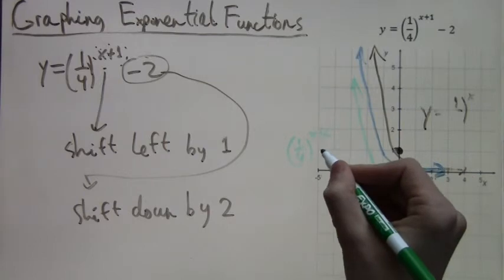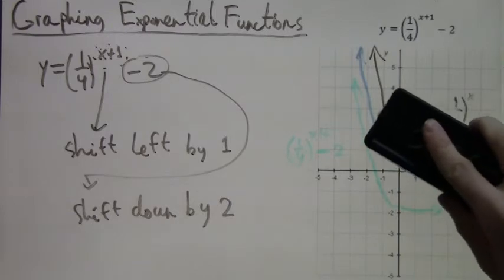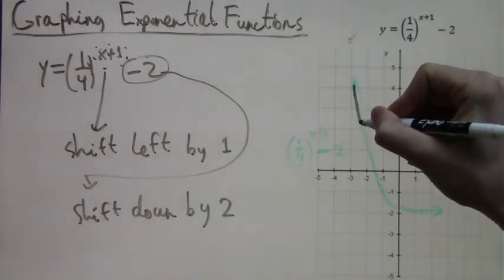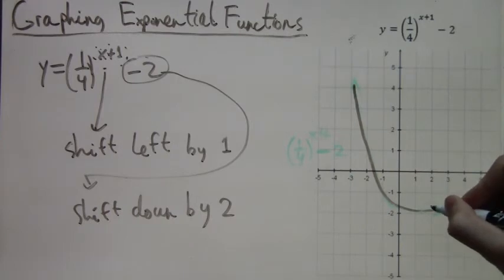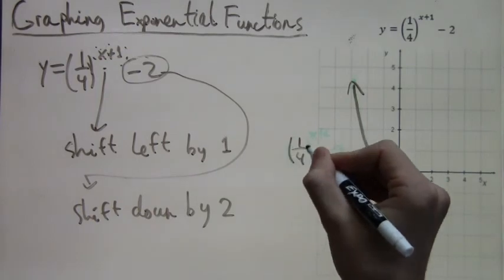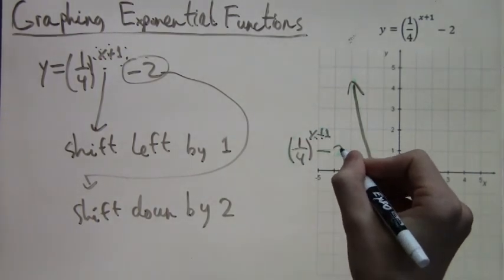And in just a second, since this is going to be our final answer, we don't need the blue or the black graphs. I'll erase them and recolor the green graph black so it's easier to see. And this will be our final answer once we're done highlighting it. And that's it. There is a graph of one fourth to the x plus one minus two.